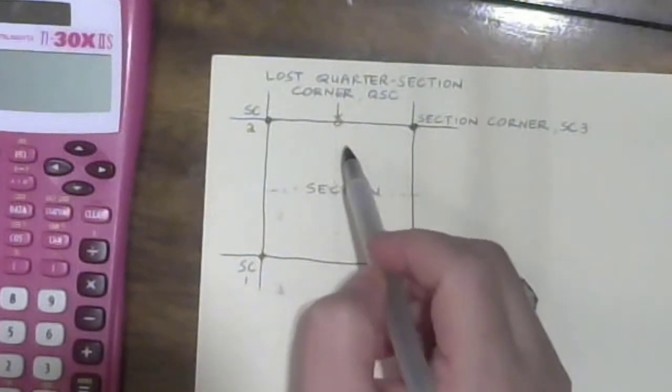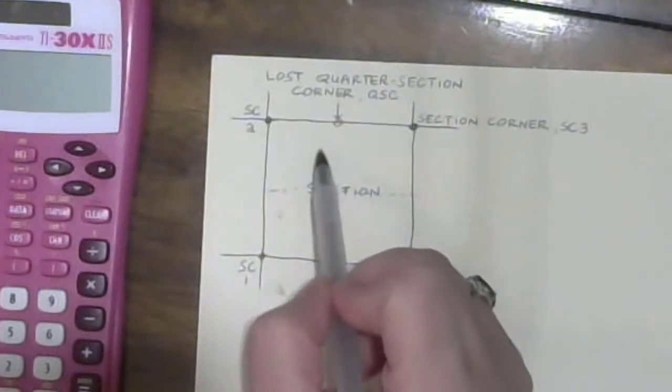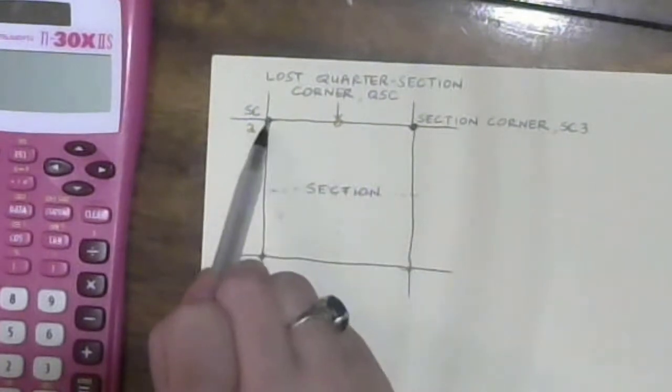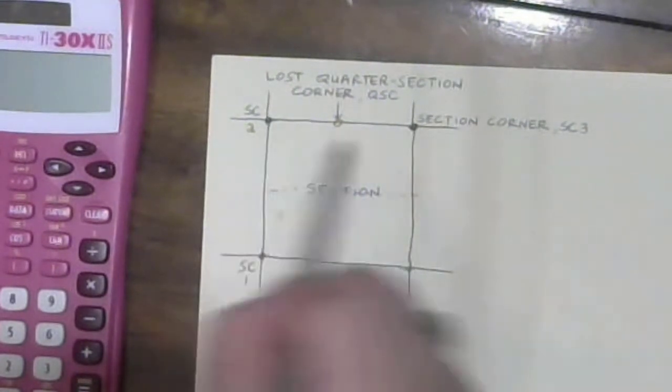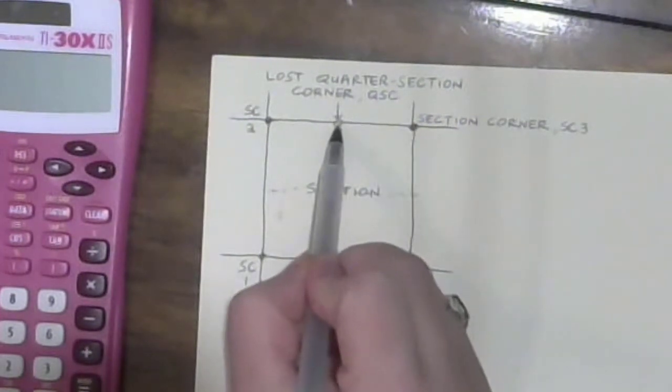So we're going to find it or restore it mathematically. So you've got your section corner two, section corner three, and the lost quarter section corner is in the middle.